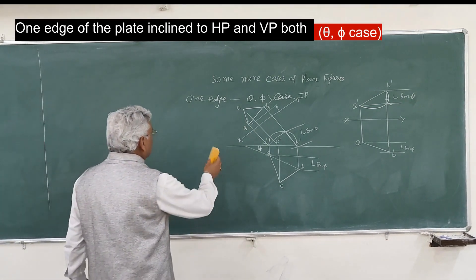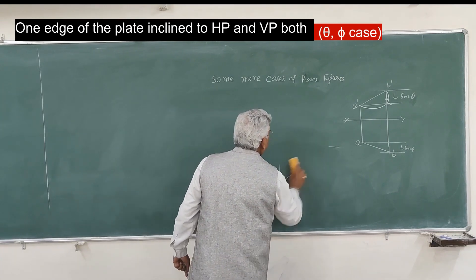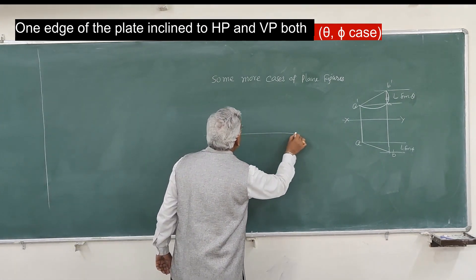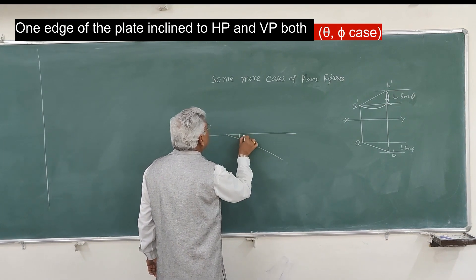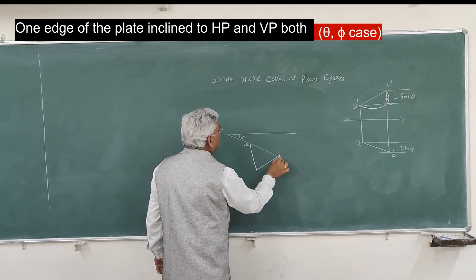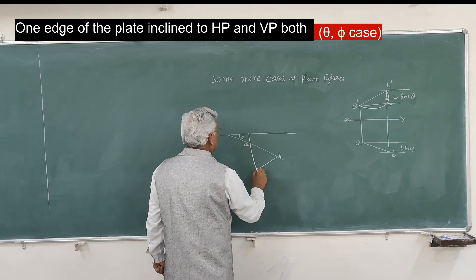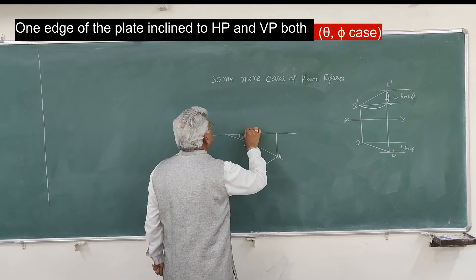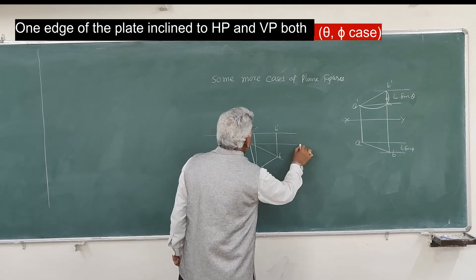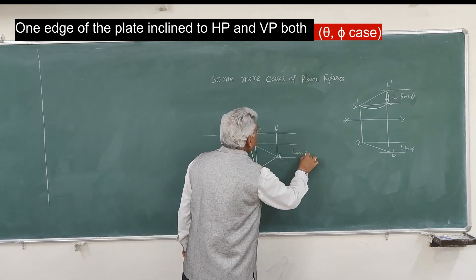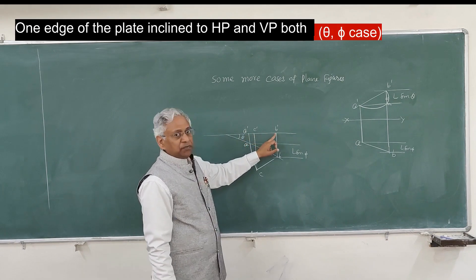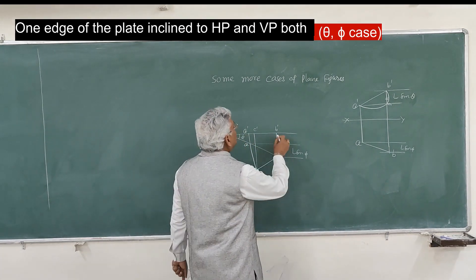Alternatively, you can also solve this problem by first satisfying the condition of phi as we have done earlier. Place A, B, and C such that A', C', B' is the elevation of the three points. Again, this is L·sin(phi) because AB is the true length and phi is the true angle.